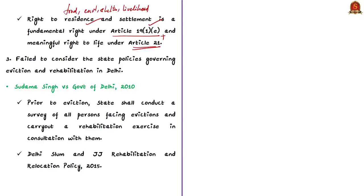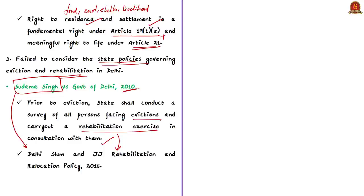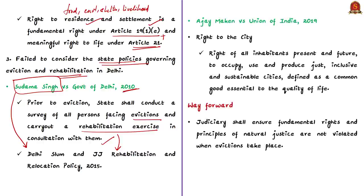The Supreme Court order also failed to consider state policies governing eviction and rehabilitation in Delhi. The Delhi High Court in the Sudama Singh case of 2010 observed that prior to eviction, the state shall conduct a survey of all persons facing eviction and carry out a rehabilitation exercise in consultation with them. This judgment led to the Delhi Slum and JJ Rehabilitation and Relocation Policy of 2015. The Delhi High Court in the Ajay Maken case of 2019 also invoked the concept of 'right to the city' — the right of all inhabitants to occupy, use and produce just, inclusive and sustainable cities as a common good essential to quality of life.